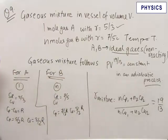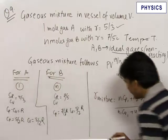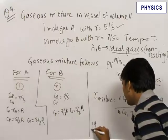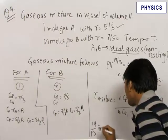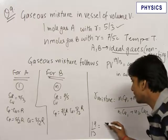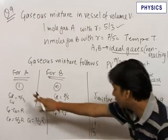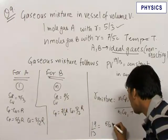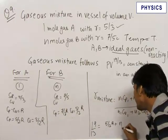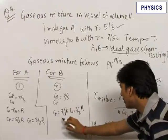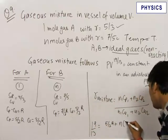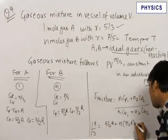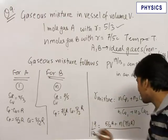Now we need to feed in these values to get 19 by 13 is equal to n1 Cp1, that is 1 into Cp1 that is 5 by 2 R, plus n into the Cp for gas B that is 7 by 2 R, divided by n1 Cv1